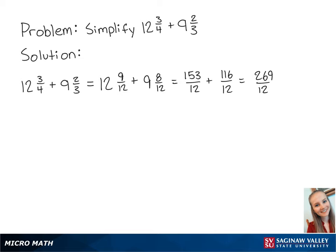Finally, we need to convert the fraction back into a mixed number. 12 goes into 269 22 times with 5 parts left over. So we are left with 22 and 5 twelfths.